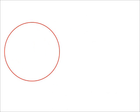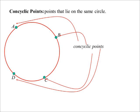Concyclic points are points that lie on the same circle. Those four points are concyclic.